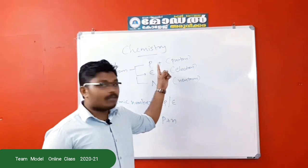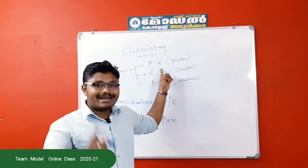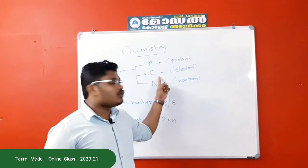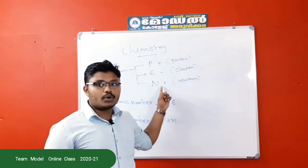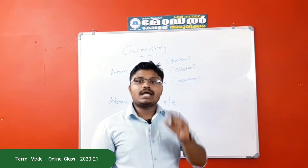You can explain the same three forms. The first form is the proton, the second is the electron, and the third is the neutron. These three forms are properties.